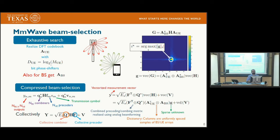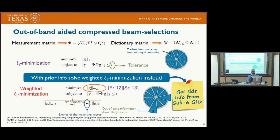We establish notational simplifications: F^T ⊗ Q is called the measurement matrix, and A_UE^conjugate ⊗ A_BS is called the dictionary matrix. To reconstruct the sparse unknown G, we minimize the L1 norm of G subject to the constraint that the residual is within tolerance epsilon, which is related to the noise variance. However, this optimization problem does not incorporate any prior information about the support of G.